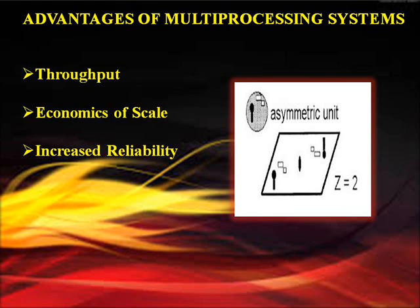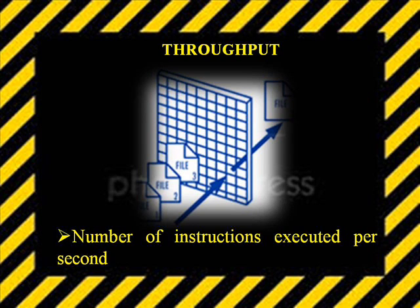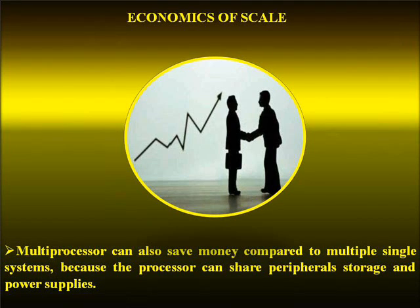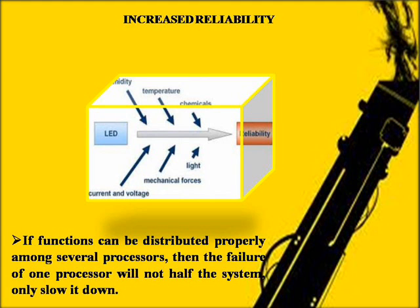Advantages of Multiprocessing System: Throughput, Economics of Scale, and Increased Reliability. Throughput refers to the number of instructions executed per second. Economics of Scale: a multiprocessor can save money compared to multiple single systems because processors can share peripheral storage and power supplies. Increased Reliability: if functions are distributed properly among several processors, the failure of one processor will not halt the system, only slow it down.